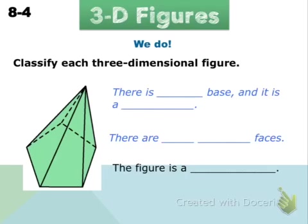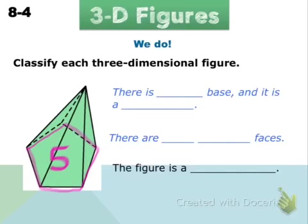Let's classify this 3D figure together by thinking about some of its different attributes. First, we want to think about the base. The base has one, two, three, four, five sides. Notice how many bases there are — for this example, there's only one base. That base's shape is a pentagon — five is 'pent' — a pentagon.